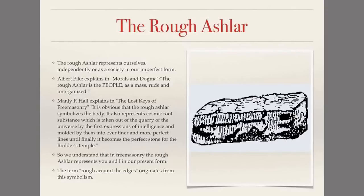So we understand in Freemasonry the rough Ashlar represents you and I in our present form, with a lot of work to do, a lot of imperfections — we haven't quite started yet to perfect ourselves. The term 'rough around the edges,' when speaking of somebody that doesn't have quite the attitude or outlook we'd prefer, originates from this symbolism of the rough Ashlar not quite fitting into the scheme of things, being rude or arrogant.